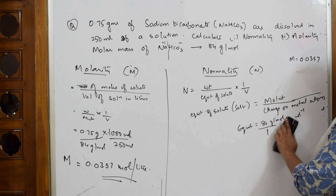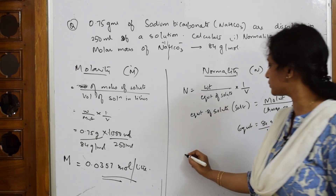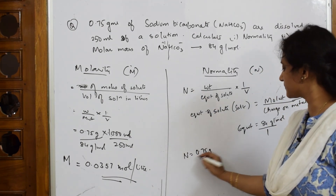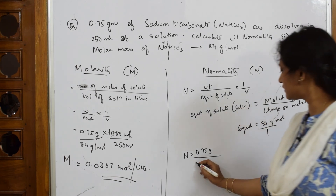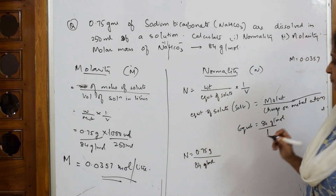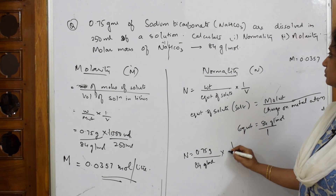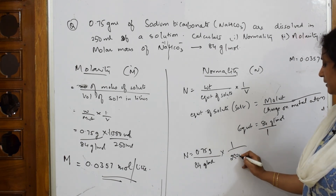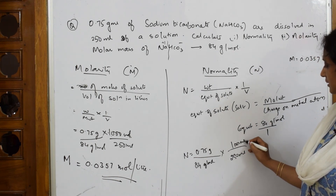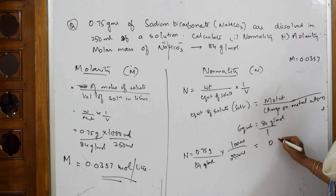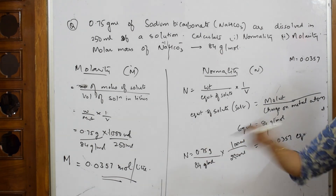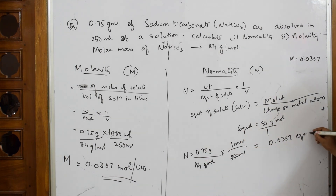Now substituting: N = 0.75 g ÷ 84 (g/equivalent) × 1000/250. This again gives 0.0357 equivalents per liter. Since molarity and normality come out equal here, the unit for normality is equivalent per liter. That completes the numerical.